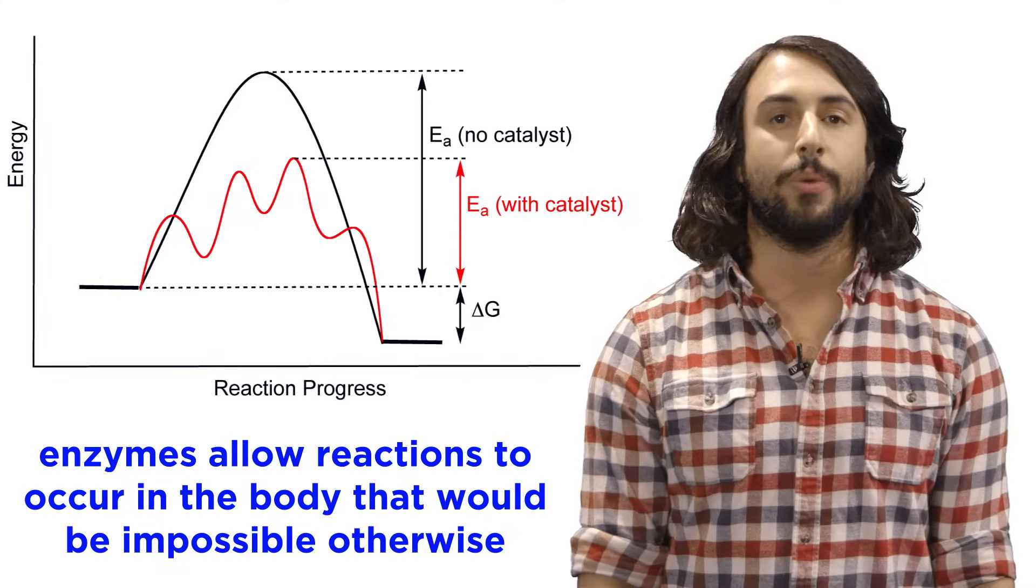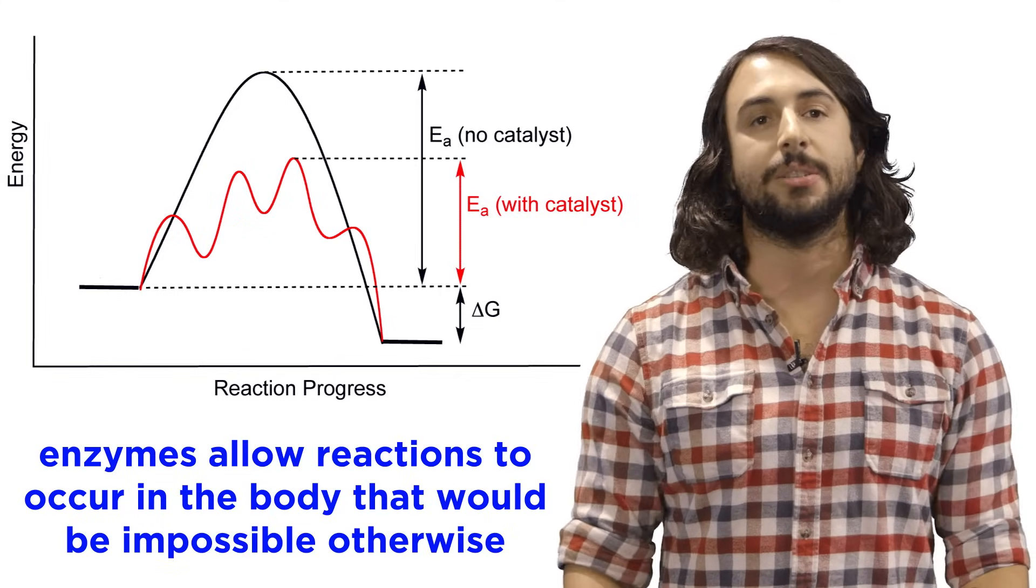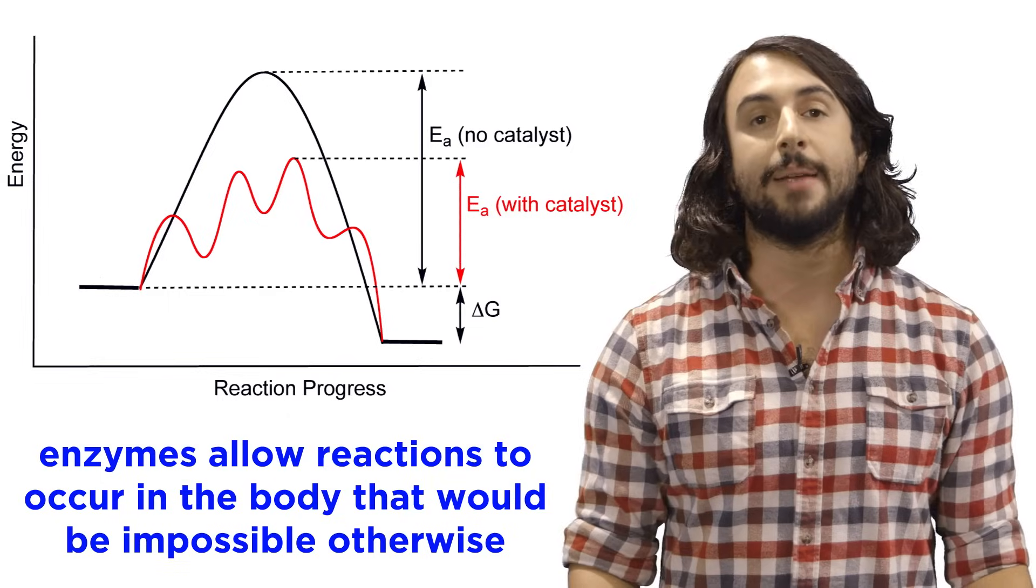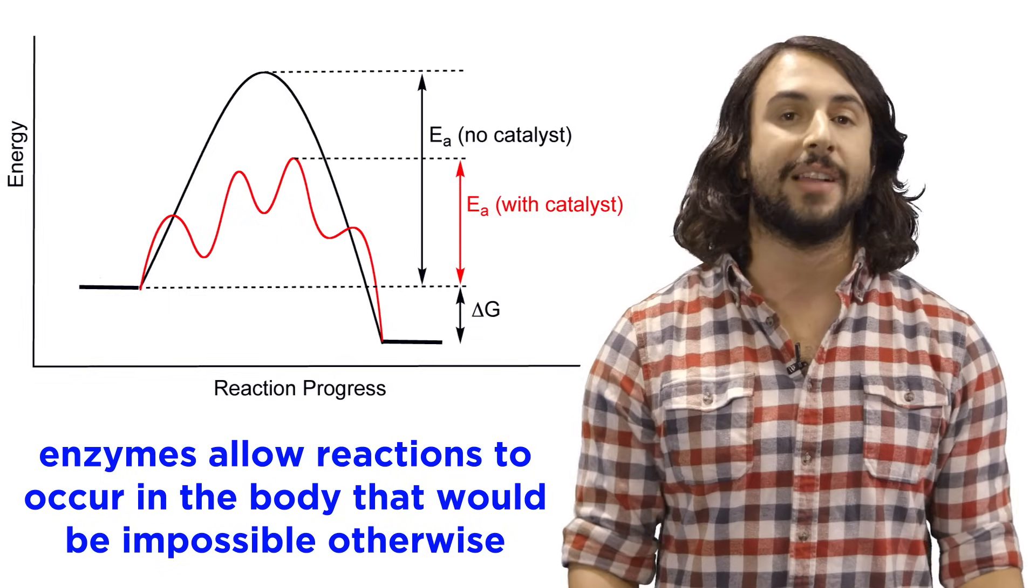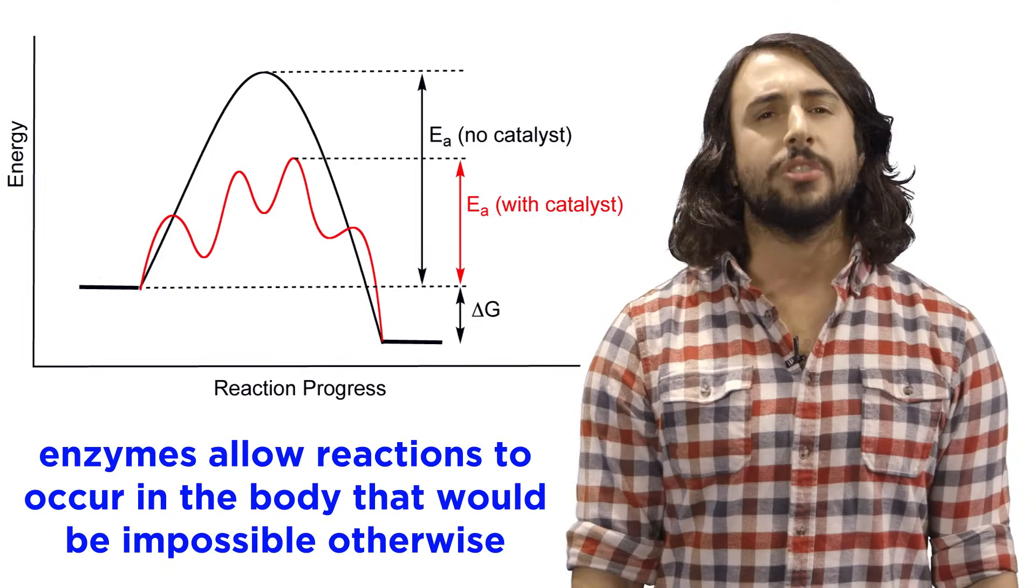An enzyme takes a chemical reaction that would be nearly impossible inside the body and makes it up to a trillion times more favorable, such that it is feasible to occur on a normal biological time scale. So how do they work?